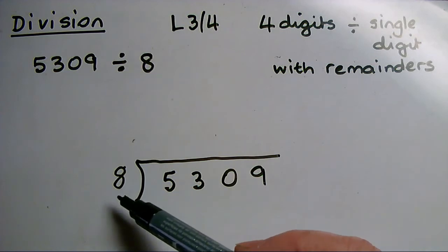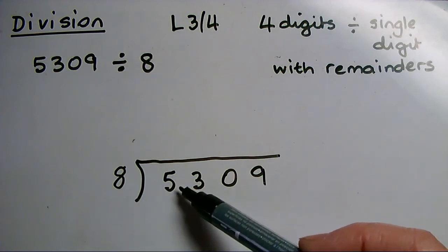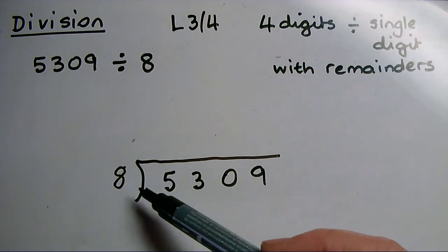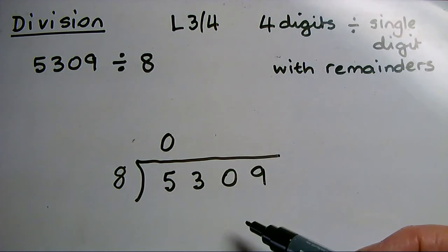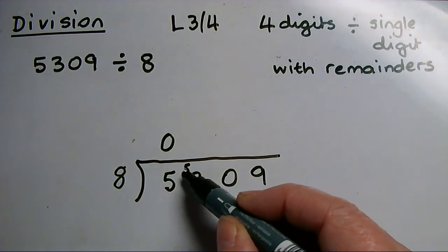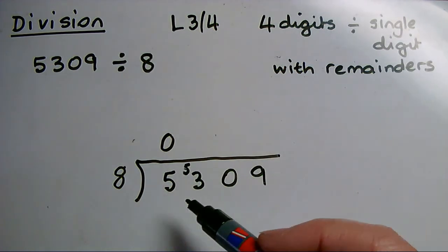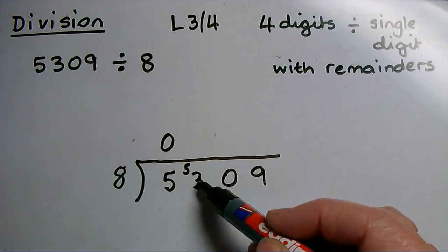My first thing is, how many 8s can I get out of 5? I've got 5 there in the thousands column. How many 8s could I get out of 5? The answer is, I can't get any. So I need to carry that 5 across and treat my first sum as, how many 8s can I get out of 53?